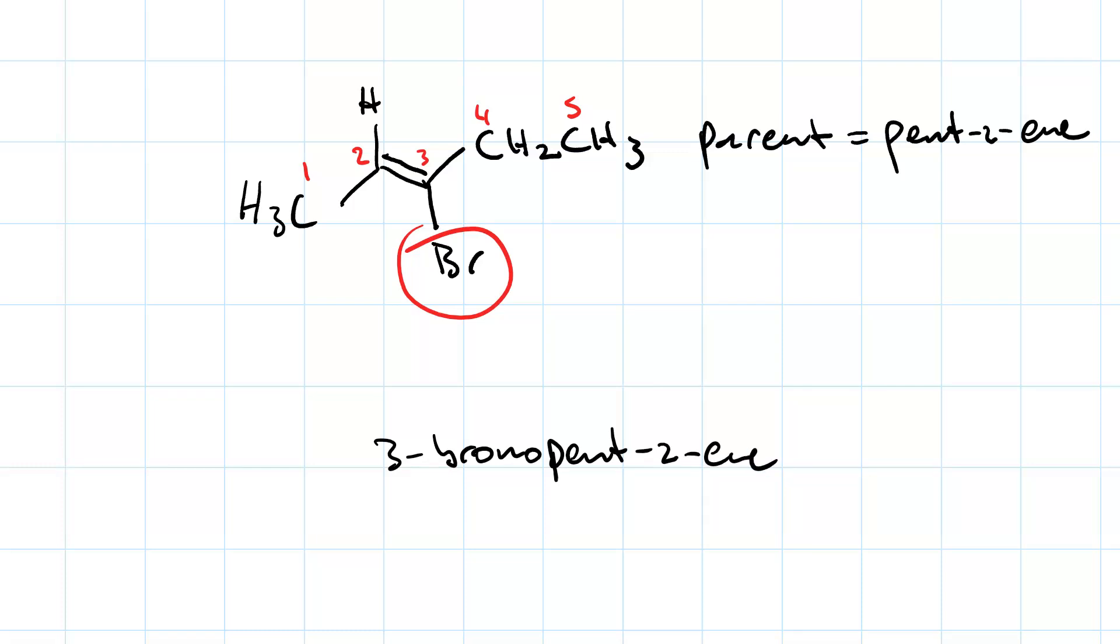But then, how do we differentiate it from this molecule? Which is also 3-bromopent-2-ene. Well, we see that the high priority groups on each of the sp2 hybridized carbons are pointing in the same direction here.